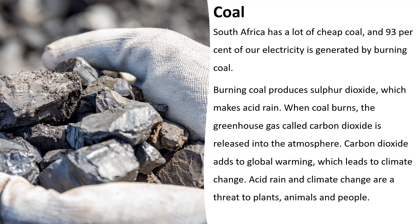Coal. South Africa has a lot of cheap coal and 93% of our electricity is generated by burning coal. Burning coal produces sulfur dioxide, which makes acid rain. When coal burns, the greenhouse gas called carbon dioxide is released into the atmosphere. Carbon dioxide adds to global warming, which leads to climate change. Acid rain and climate change are a threat to plants, animals and people.